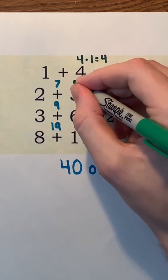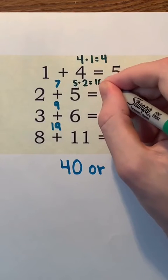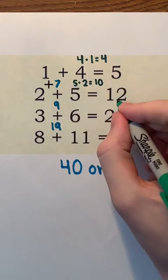This pattern continues on. In the second equation, we have 5 times 2 which is 10. Then, 10 plus 2 is 12.